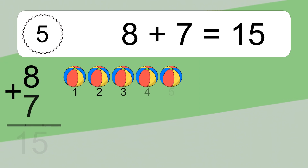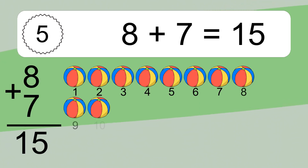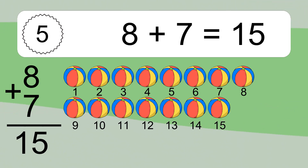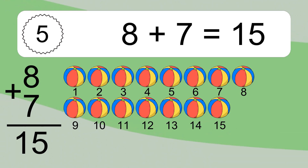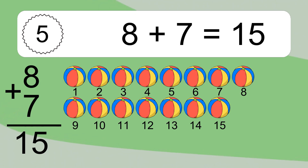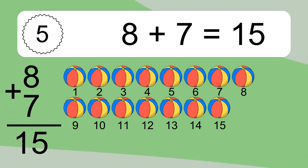8 plus 7 equals 15. Let's count it. 1, 2, 3, 4, 5, 6, 7, 8, 9, 10, 11, 12, 13, 14, 15.